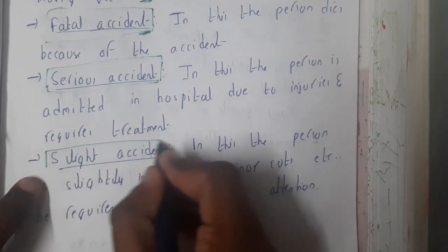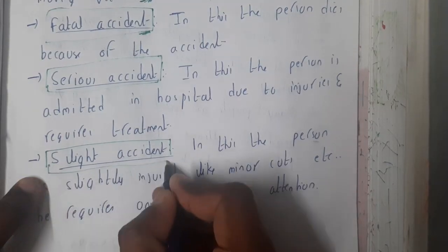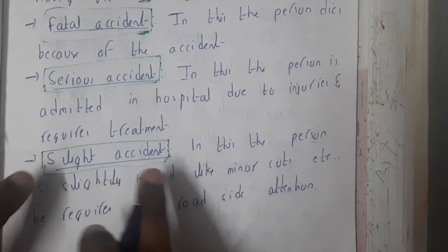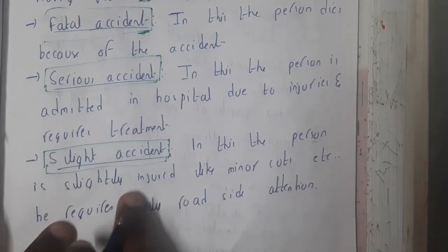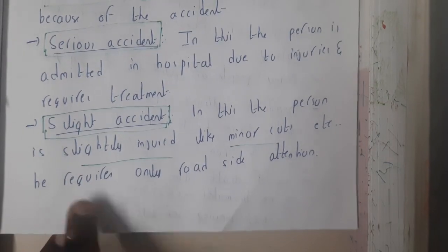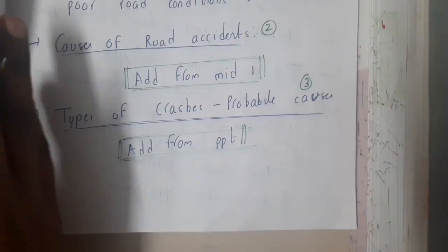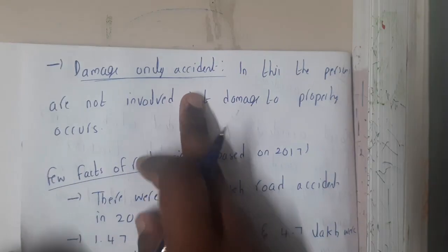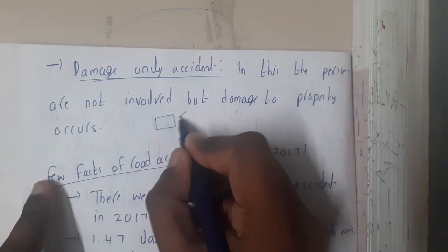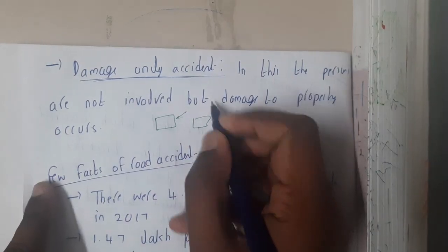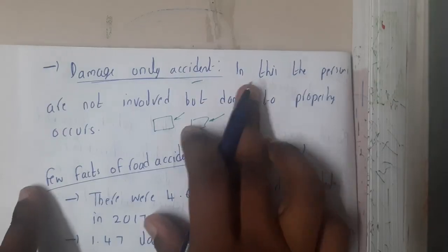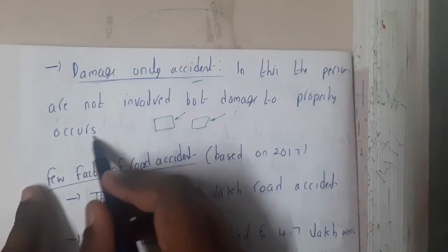Similarly, slight accident — where there are small injuries like minor cuts or any small things — we call it a slight accident with slight injuries or minor cuts. Damage-only accident is when everyone is safe but some public or private property has been damaged. Only damage to property has occurred.